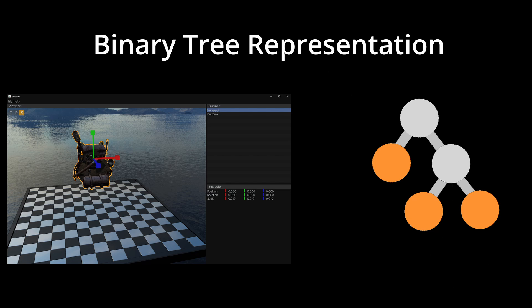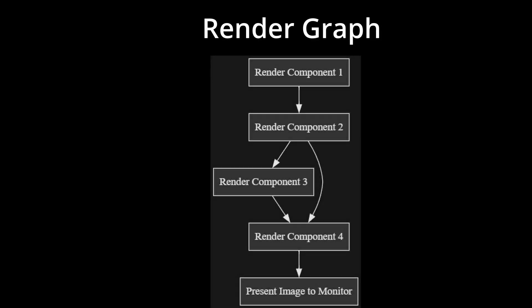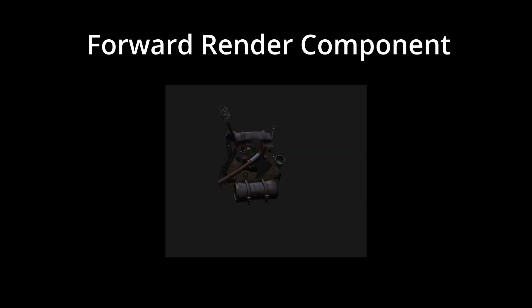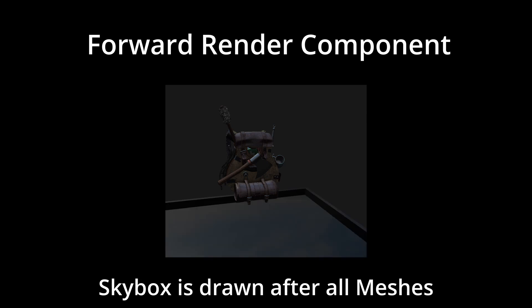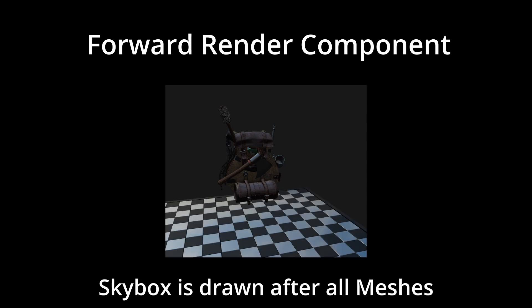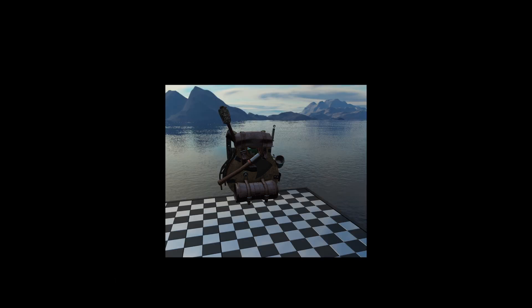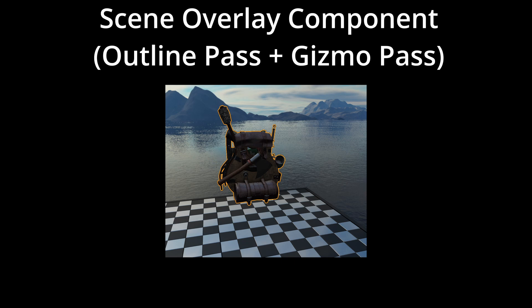While the window manager handles the controls and input logic of the windows, it does not render them directly. To draw pixels onto the screen, my engine uses a render graph that consists of nodes called render components. Currently, the game scene uses a forward rendering component to draw itself. When we open a scene in the editor, I use a scene overlay component to apply outlining and render gizmos. This is the image that we see in the viewport window.